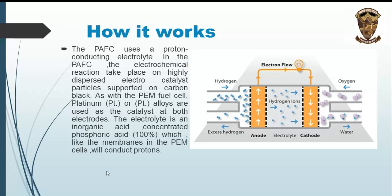As with the PEM fuel cell, platinum or platinum alloys are used as the catalyst at both electrodes. The electrolyte is concentrated phosphoric acid at 100 percent, which, like the membranes in the PEM fuel cell, conducts protons. Hydrogen decomposes into hydrogen ions and electrons; electrons move through the outer circuit while hydrogen ions pass through the electrolyte from anode to cathode. At the cathode, oxygen is provided and combines with hydrogen ions and electrons to make water, which exits the cell.